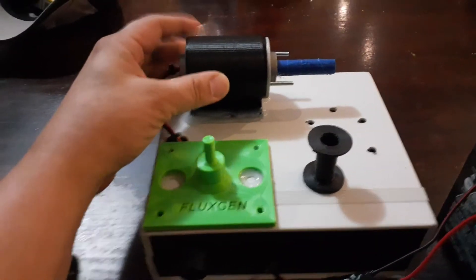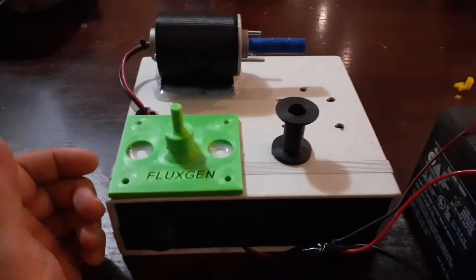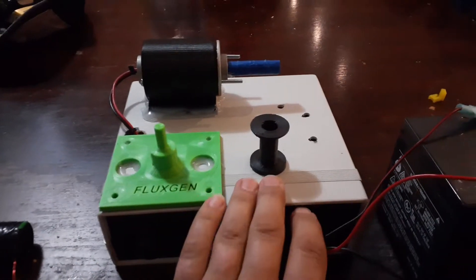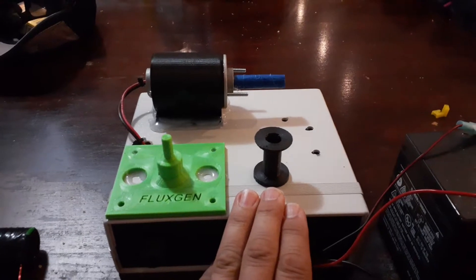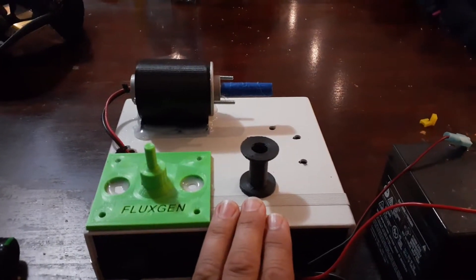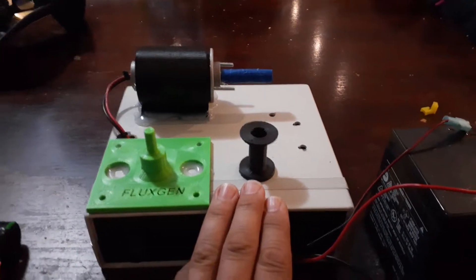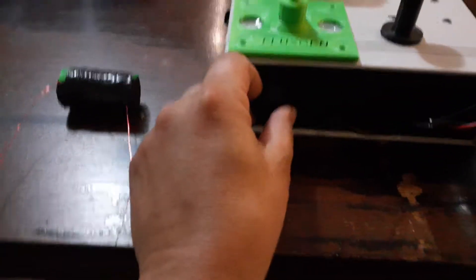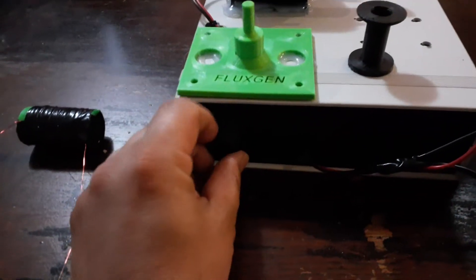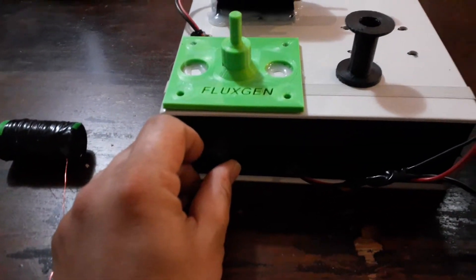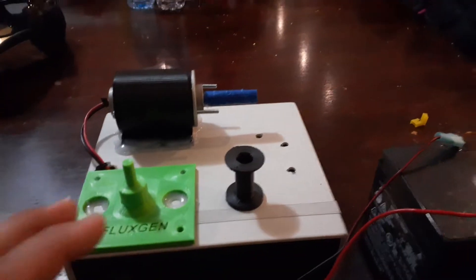Inside the proto box I got a pulse width modulator that can handle up to about 15 amps, which also has a potentiometer here so I can control the RPM. So when you're doing the coil winding it's pretty difficult to control.